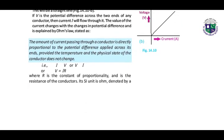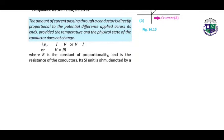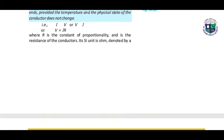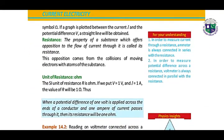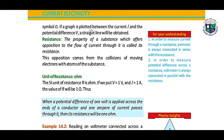According to Ohm's law, the amount of current passing through a conductor is directly proportional to the potential difference applied across its ends, provided the temperature and the physical state of the conductor do not change. Where R is the constant of proportionality and is the resistance of the conductor, its unit is ohm denoted by the symbol Ω. If a graph is plotted between the current I and the potential difference V, a straight line will be obtained.